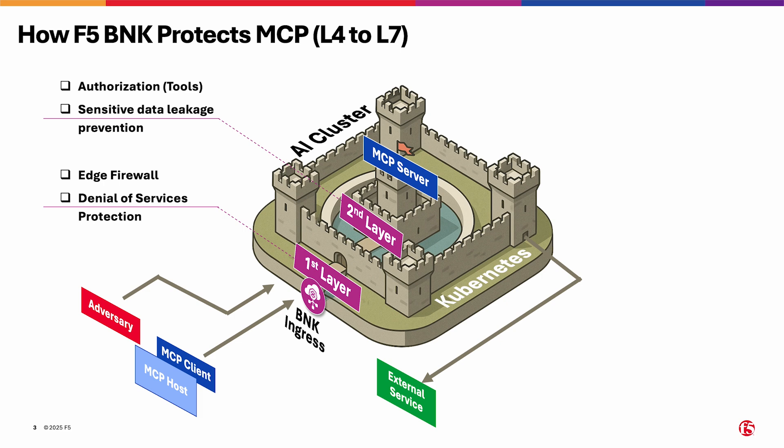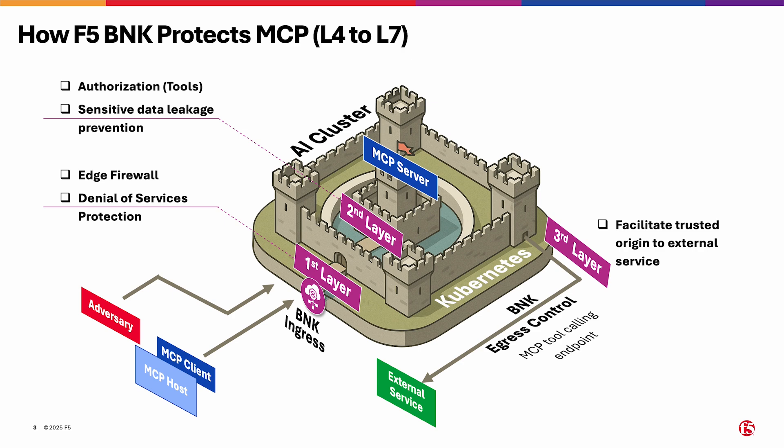BNK can also redact or mask sensitive data like PII, credit card info, or other custom attributes. Additionally, BNK enables trusted egress by assigning unique IP identifiers, allowing external systems to verify the calling party — critical for audit trails and traceability. Finally, all traffic and events can be streamed to your SIEM for complete visibility and compliance.